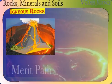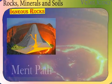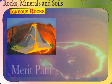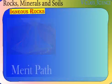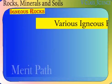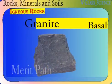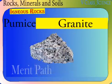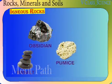This lava cools to form solid rock again called igneous rock. The various igneous rocks are basalt, granite and pumice. Different igneous rocks have different minerals and colors.